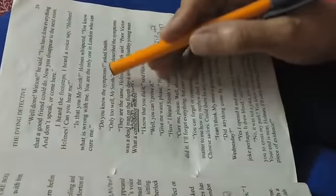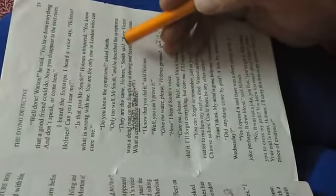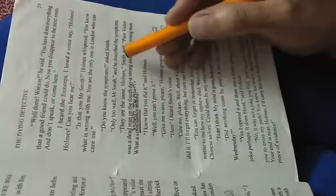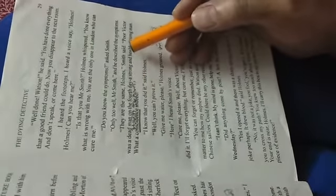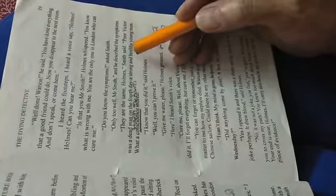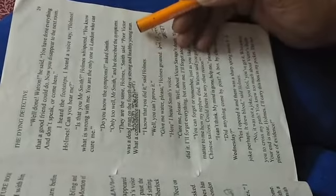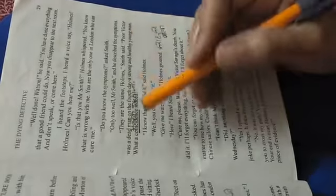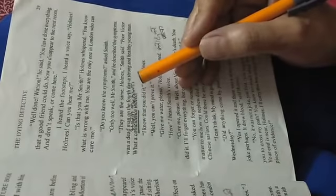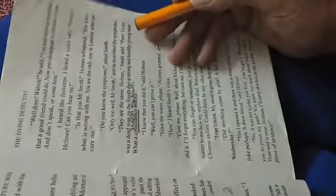Do you know the symptoms? asked Smith. Smith ne puchha, kya tumhe iske lakshan ke baare mein pata hai? Only too well Mr. Smith, and he described the symptoms. Unnho ne ka haan, acchhe tura se, aur unnho ne sare lakshan bata hai. They are the same Holmes, Smith said. Ye toho vahin lakshan hai. Poor Victor was a dead man on the fourth day, a strong and healthy young man. Bichara Victor, woh bhi is vimari ke 4th day marr gaya tha. Bohat he healthy, swast, woh naujawan aadmi tha.